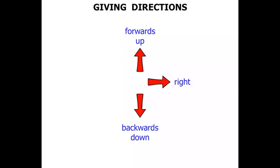In this lesson we do some work on giving directions. Now this arrow is pointing forwards or up. What about this arrow? We could say that it's pointing backwards or down. This arrow is pointing to the right. And of course the opposite of right is if it's pointing to the left.